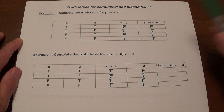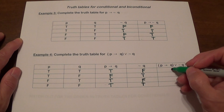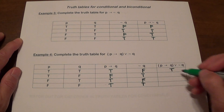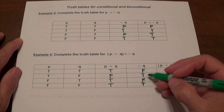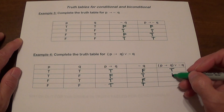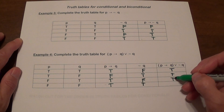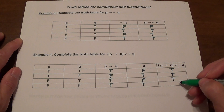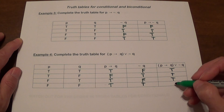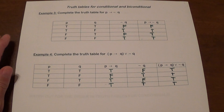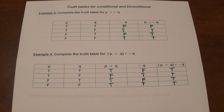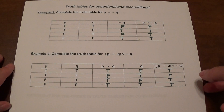Now let's look at P→(Q∨¬Q). We already have P→Q and ¬Q columns. With OR, true-false is true, false-true is true, true-false is true, and true-true is true. So all results are true.